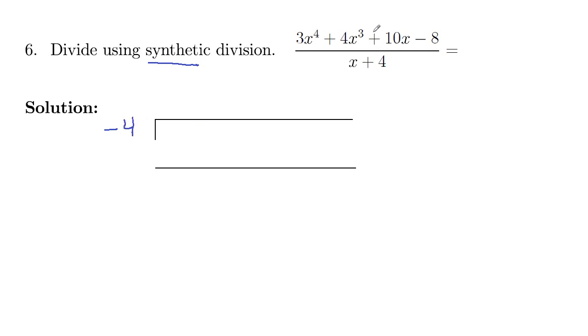And then you place the coefficients of the polynomial inside. So 3x to the 4th, 4x cubed, 0x squared, 10x, and negative 8.